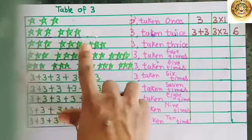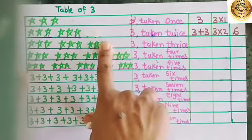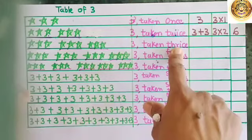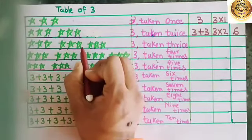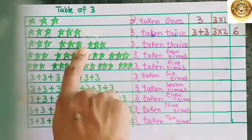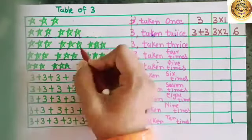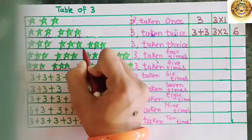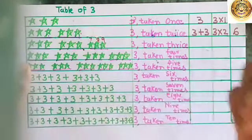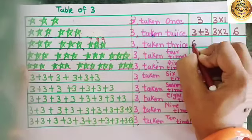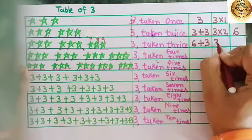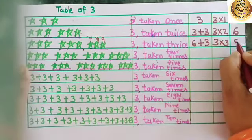Here we have 3 groups of 3 stars. So we have to take 3 thrice, or 3 times. I will not add each group again and again. I will count forward from 6. Till here, we have 6 stars. So I will count 7, 8, 9. So what is 3 thrice? I will count forward from 6: 6 plus 3. It becomes 3 3s are 9.